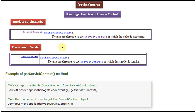Here we can see how to get the Servlet Context object. The ServletConfig interface provides one method called getServletContext(). By calling this method we can get the Servlet Context object. Another way of getting the Servlet Context object is by calling getServletContext(), for example: getServletConfig().getServletContext() to get the Servlet Context object.